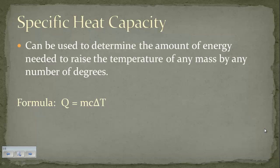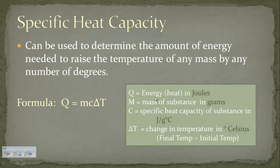This leads us to specific heat calculations. You can calculate the amount of energy needed to raise the temperature of any substance using the formula: q = mcΔT. In this formula, q is energy or heat in joules, m is mass in grams, c is specific heat in joules per gram degree Celsius, and ΔT is the change in temperature in degrees Celsius.